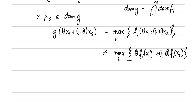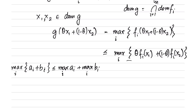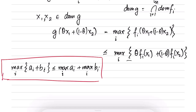We use the idea that max_i (a_i + b_i) ≤ max_i a_i + max_i b_i. Please make sure you understand this result: taking the maximum of a_i + b_i is always less than or equal to the sum of the individual maximums, because max a_i is the largest among the a_i's and max b_i is the largest among the b_i's, so their sum is obviously greater than or equal to any individual a_i + b_i.